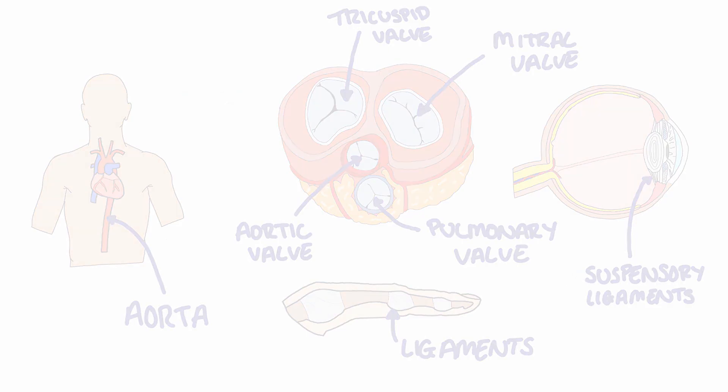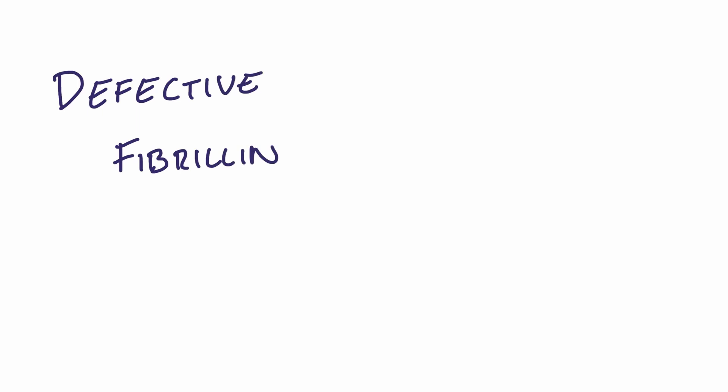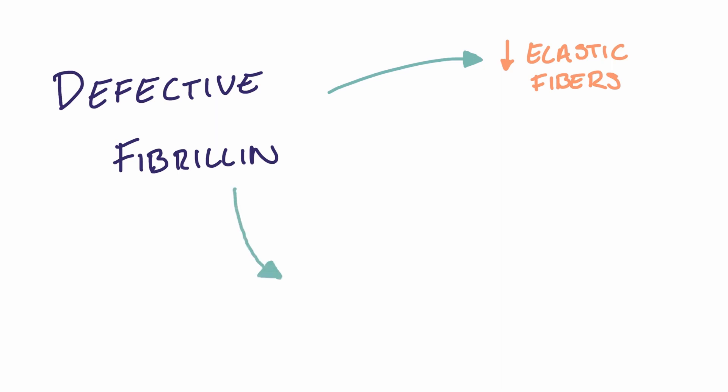In Marfan's, mutations to the FBN1 gene cause defective fibrillin production. This results in fewer elastic fibers being produced inside the extracellular matrix of the connective tissue, and the fibers that are produced have far less integrity, meaning their function is dramatically reduced.